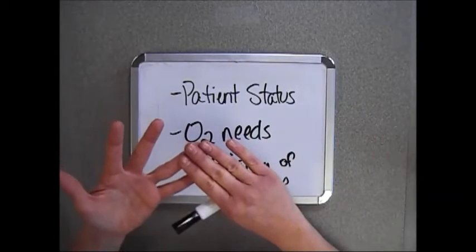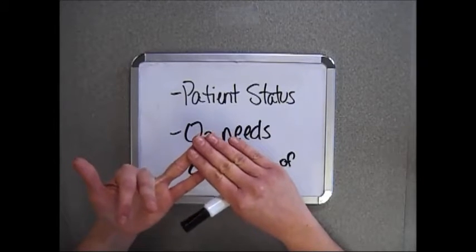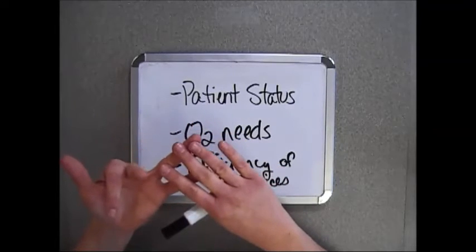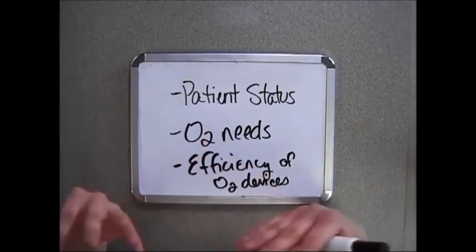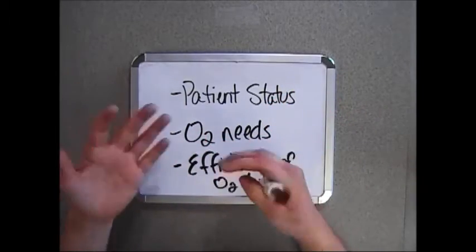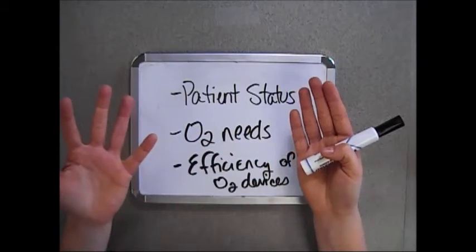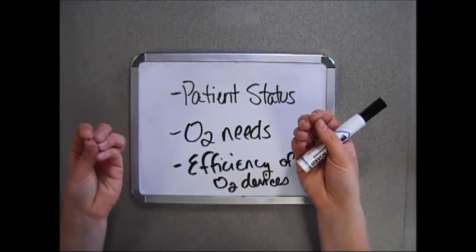We need to look at things such as the ABGs. This is going to be drawn by the respiratory therapist. It's lab work that is very valuable to tell you clues as to what's going on with the patient. Lastly, you want to check the pulse oximetry reading. This will give you your SpO2 reading or your oxygen saturation level.